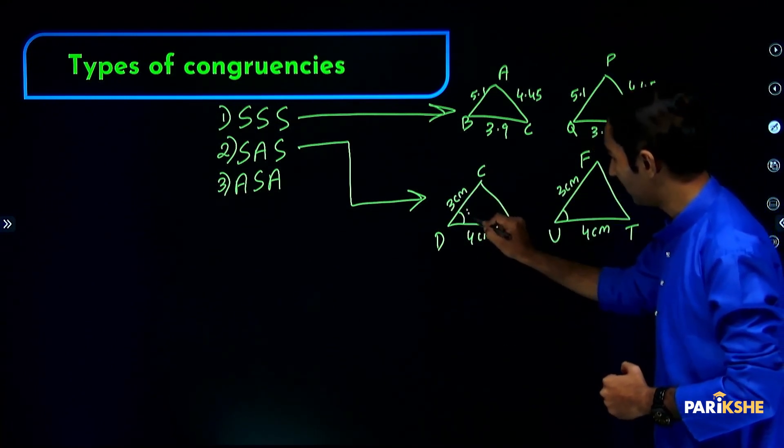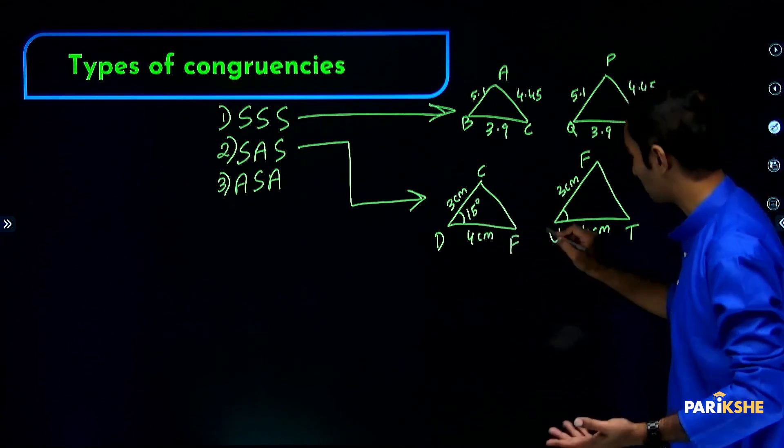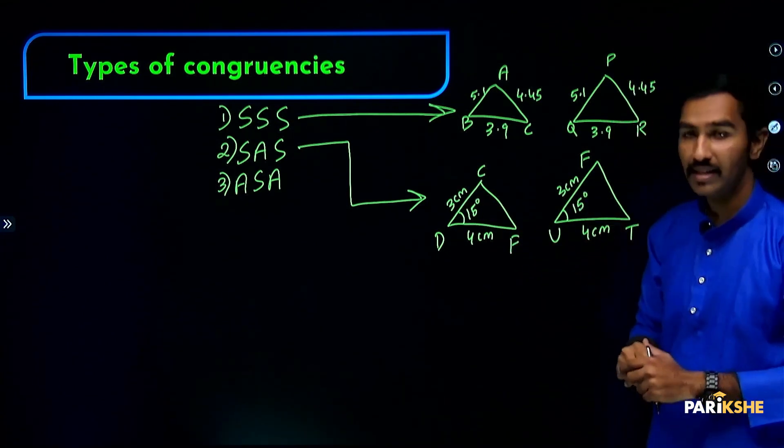CD is 3 cm. DF is 4 cm. Similarly, FU is 3 cm and UT is 4 cm.